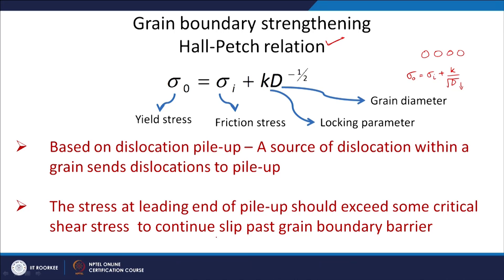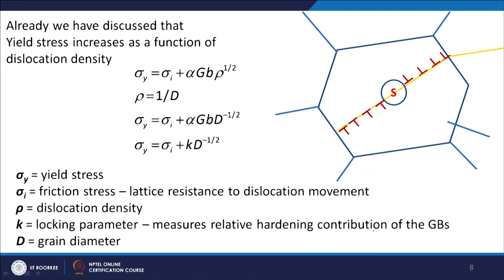The Hall-Petch relationship is based on the dislocation pileup model. A source of dislocation within a grain sends dislocations to pile up, and the stress at the leading end of the pileup should exceed some critical shear stress to continuously pass the grain boundary barrier. This pileup should impose a stress on the next grain to initiate or continue the slip process across the grain boundary. This is the idea on which the relationship is based.